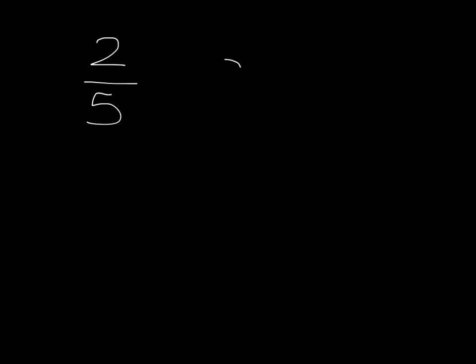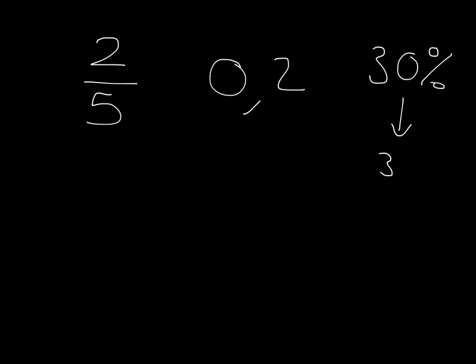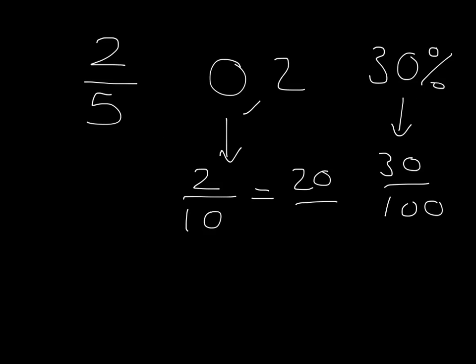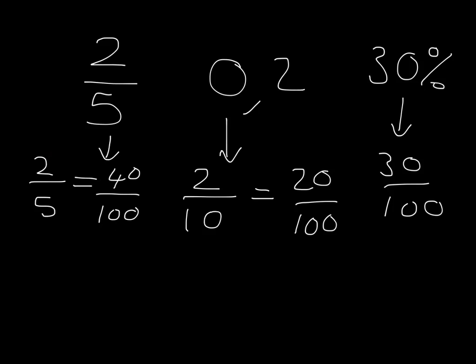One final example: which is the biggest out of 2 fifths, 0,2, or 30 percent? The easiest way is to put them all into the same form — make everything over 100. Thirty percent is 30 over 100. Zero comma two is 2 over 10, which is 20 over 100. And 2 fifths: multiply 5 by 20 to get 100, so multiply the top by 20 as well — 2 times 20 gives 40 over 100. So 2 fifths is the biggest at 40 over 100, compared to 30 over 100 and 20 over 100.